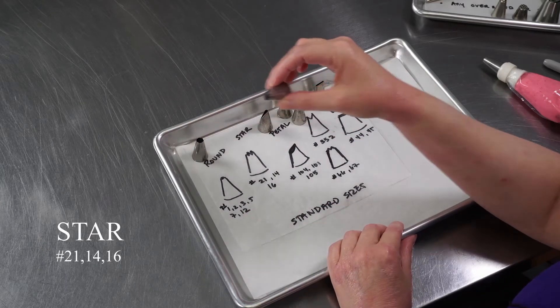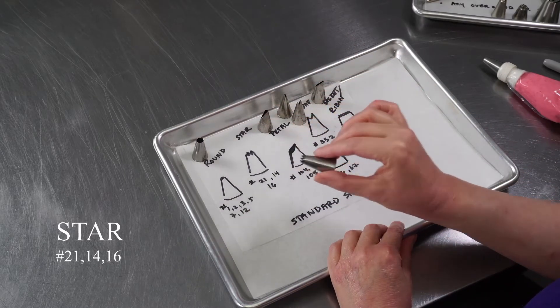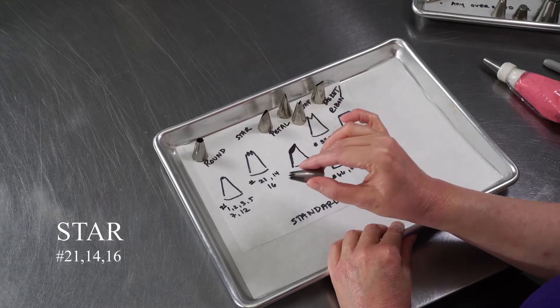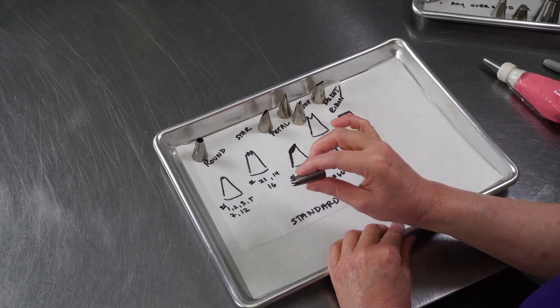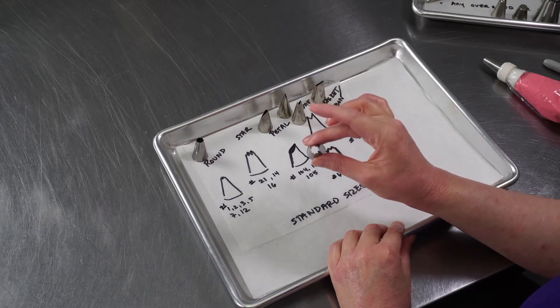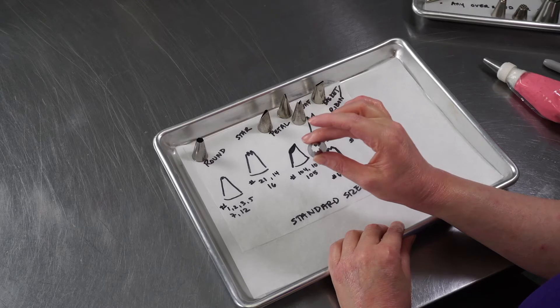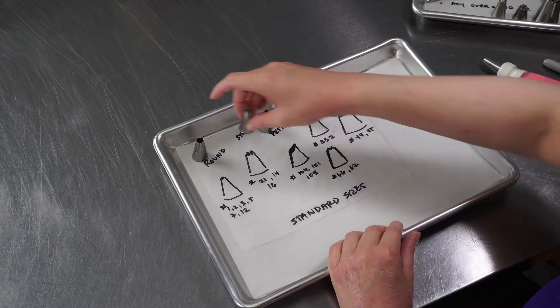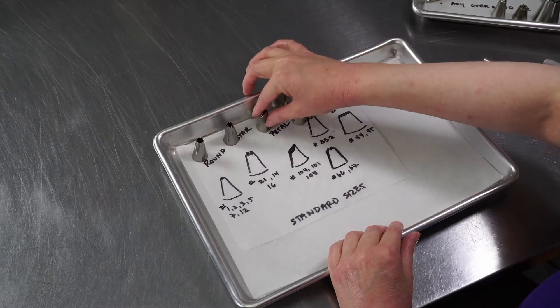The second is a star. You can see it has little tines on the end, and it's going to give you little ridges as you pipe. It's great for borders. There's a couple of popular sizes. This one is a 21. Other things like 14, 16, and 18 will give you some nice variety.